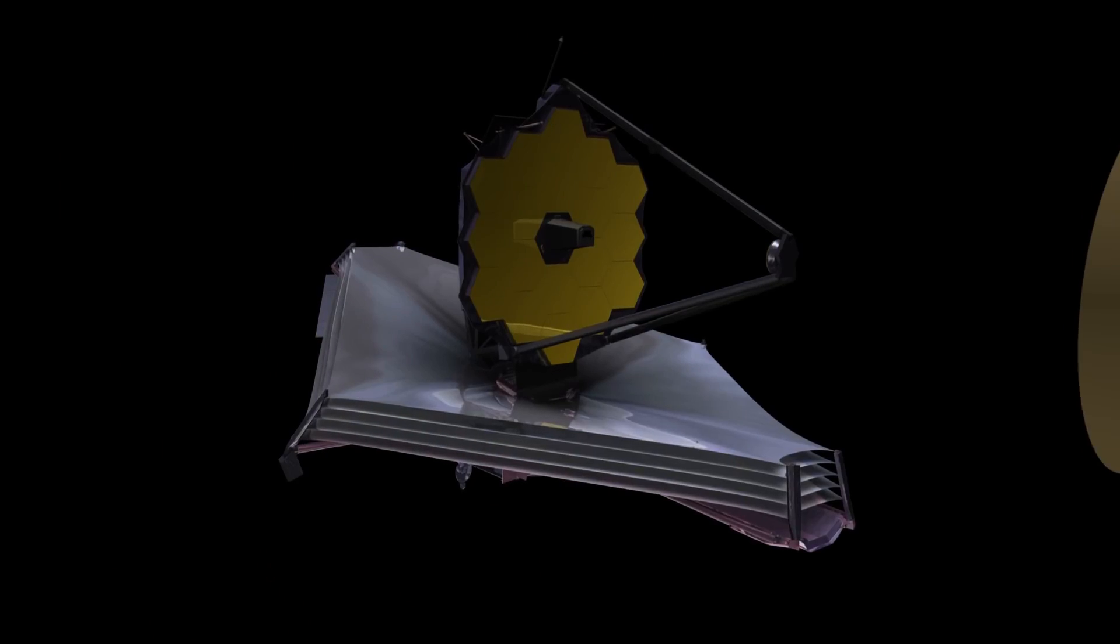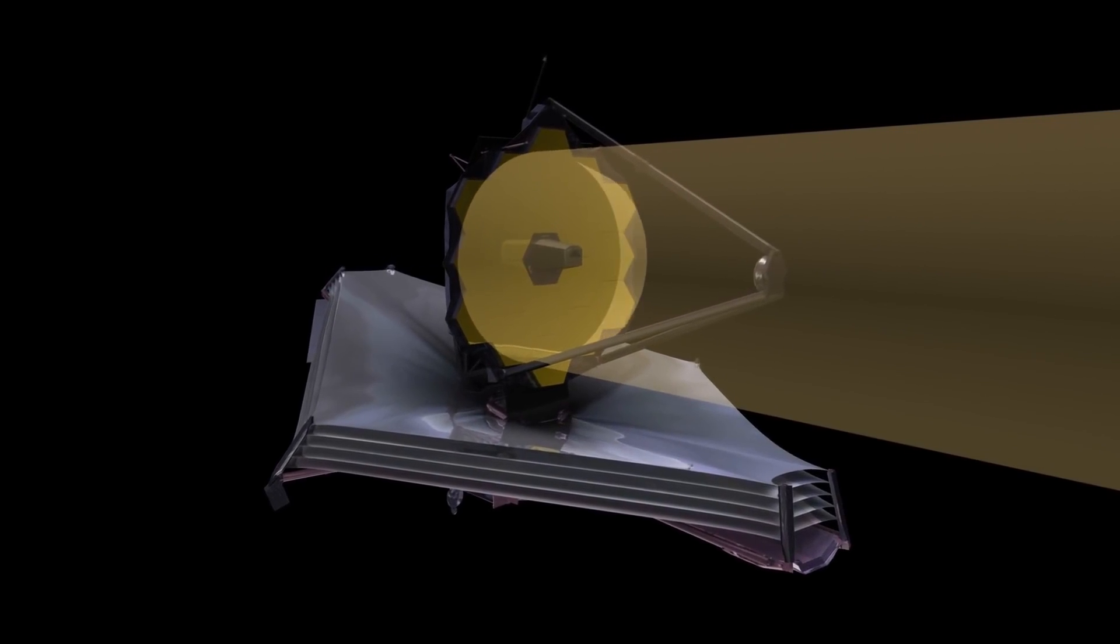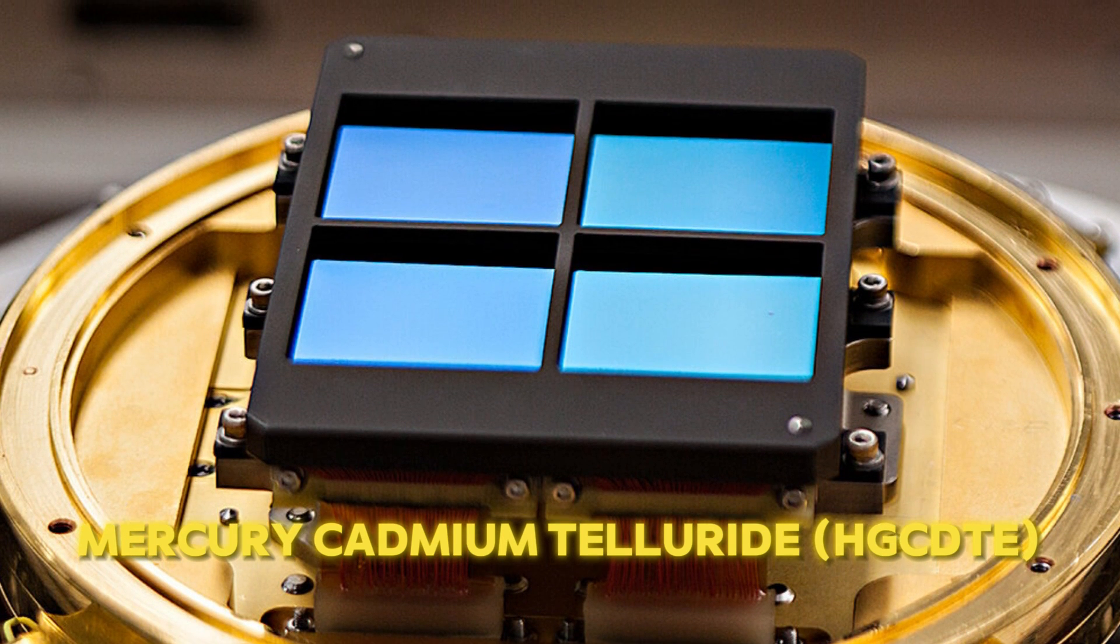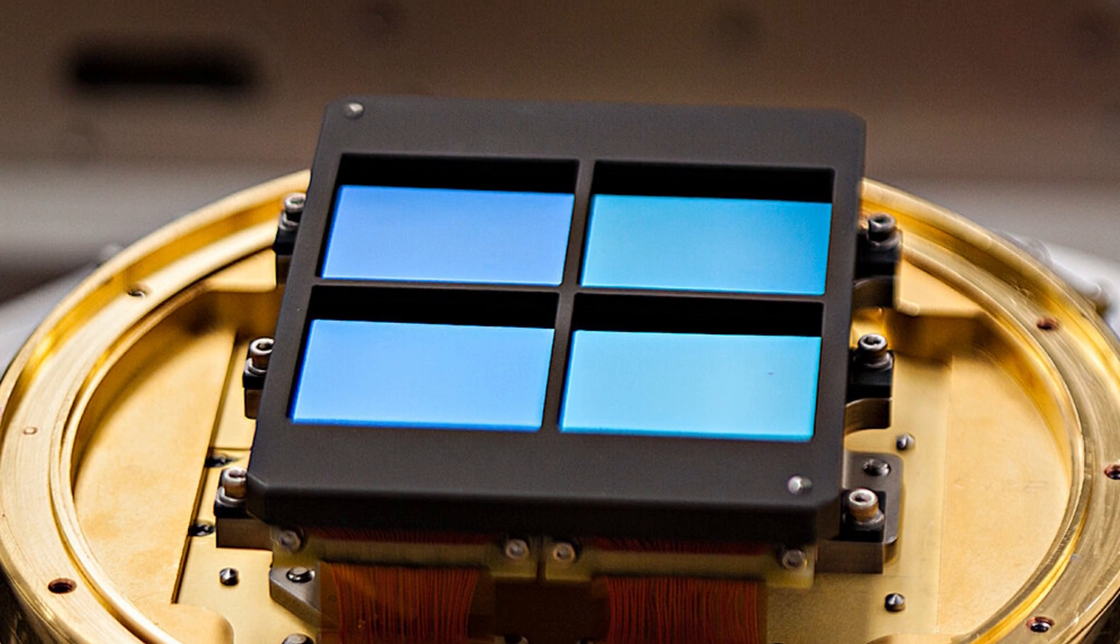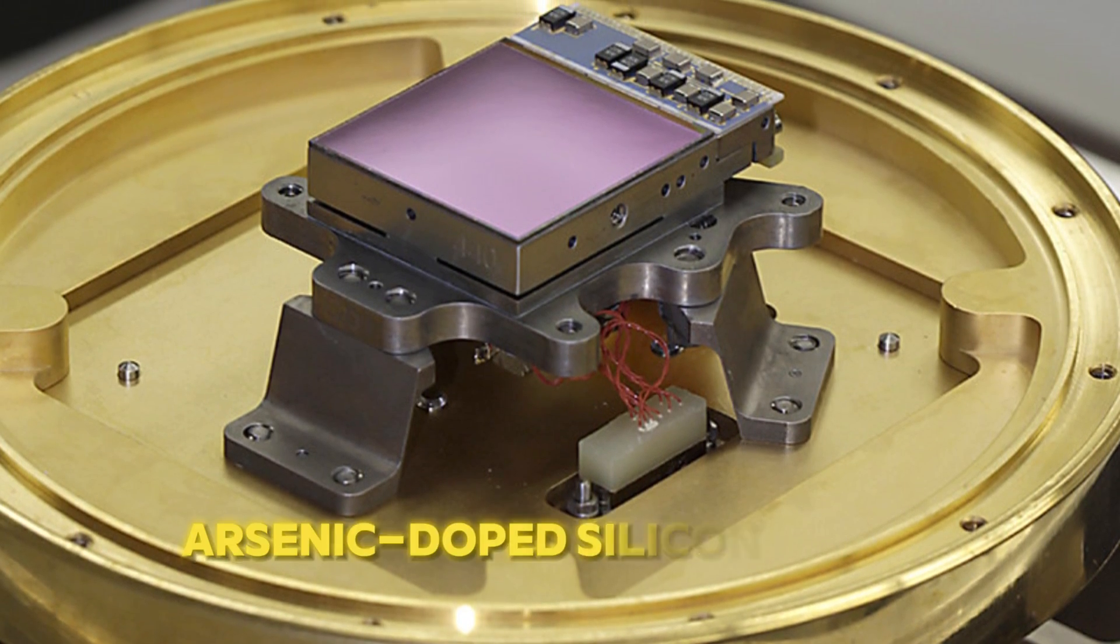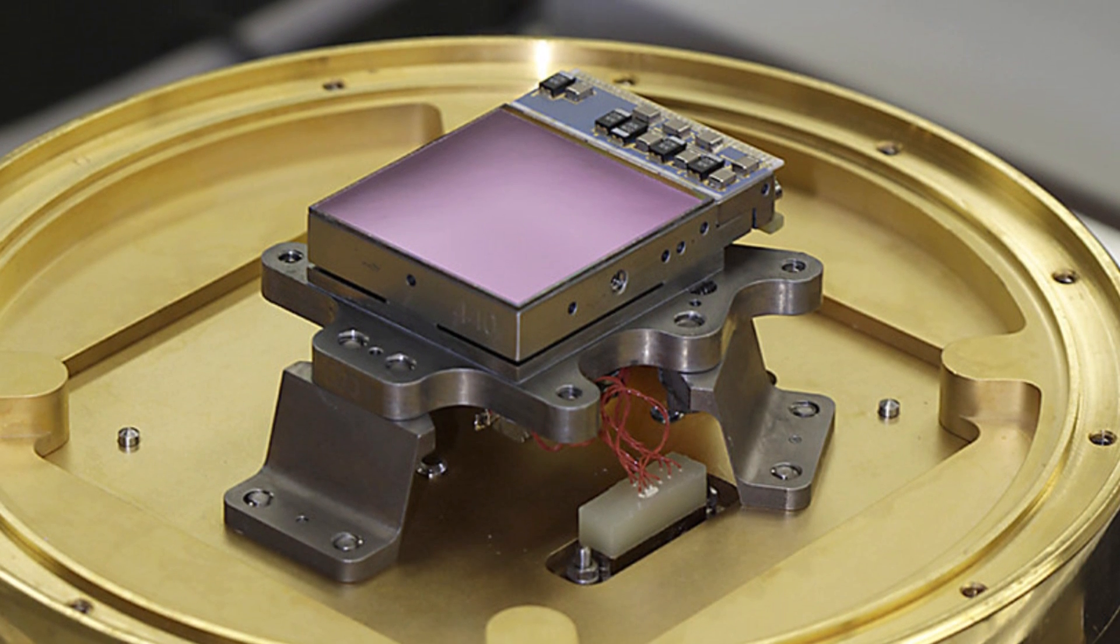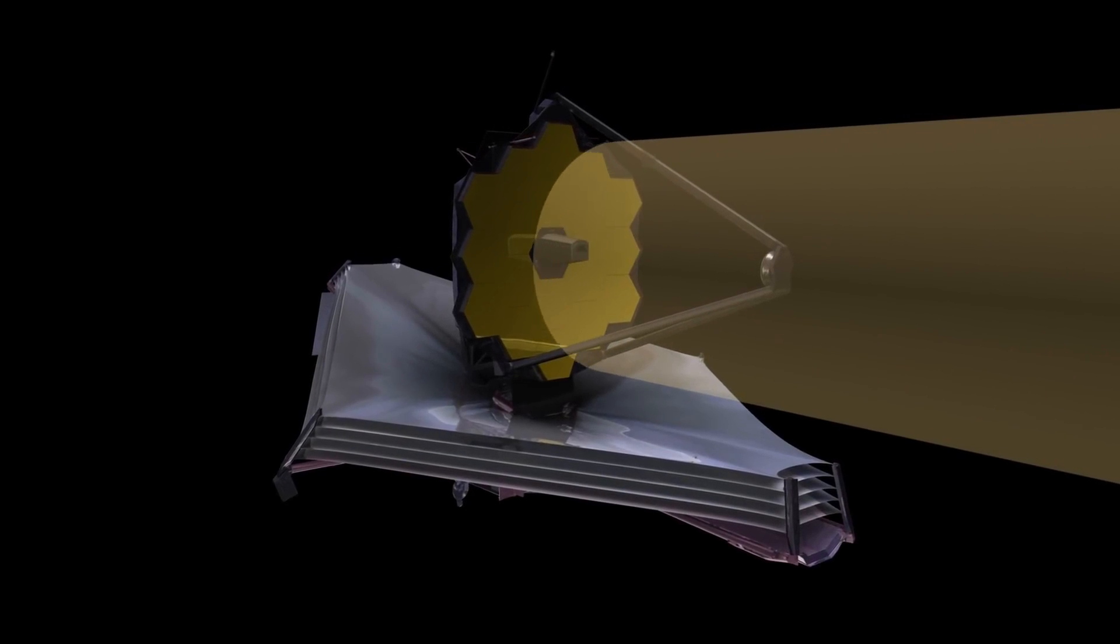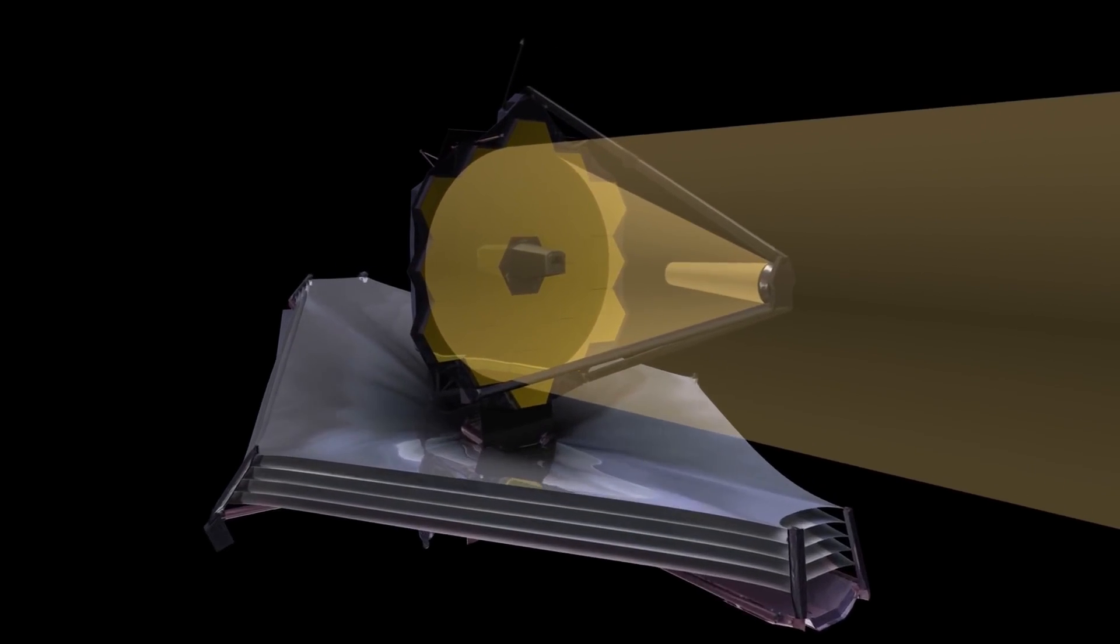The JWST uses different types of detectors for the near- and mid-infrared ranges. The near-infrared detectors are made of mercury-cadmium telluride (HgCdTe) and have about 4 million pixels each. The mid-infrared detectors are made of arsenic-doped silicon (Si:As) and have about 1 million pixels each. These detectors are very sensitive and can record the feeble light from faraway galaxies, stars, and planets.